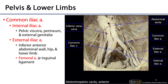The abdominal aorta descends down through the retroperitoneum and approximately at the L4 vertebral level is going to split into the common iliac arteries. Those common iliac arteries ride around the crest of the pelvic cavity and then divide into external and internal iliac arteries.